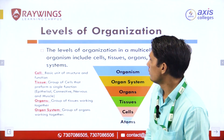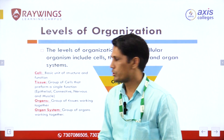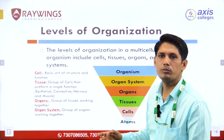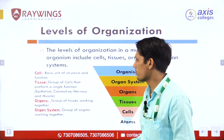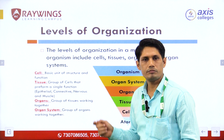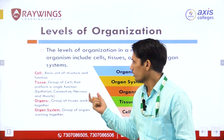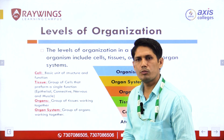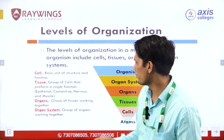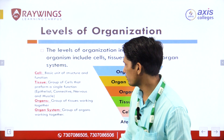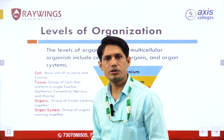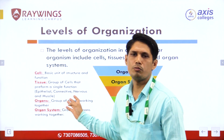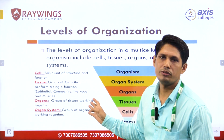Levels of organization: cells are a group of molecules. Tissues are a group of similar cells. Above that are organs and organ systems. This is also part of unit one.